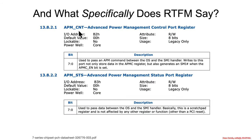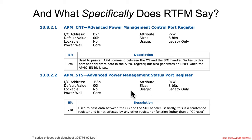There are formal definitions: port B2 is used to pass commands between the OS and SMI handler. The interesting part is B3 — it says it's used to pass data between OS and SMI handler. Basically it's a scratchpad register and is not affected by other registers or functions. Writes to B3 don't cause an SMI; writes to B2 do.